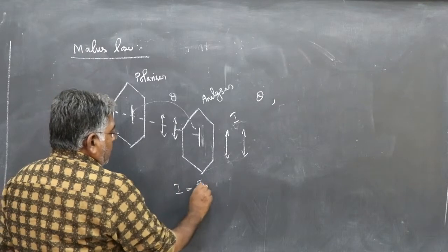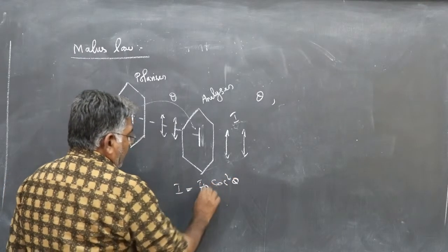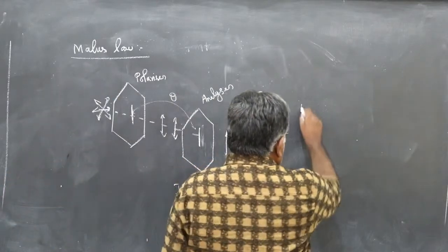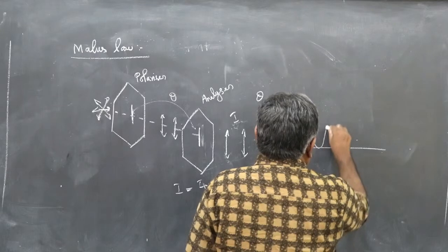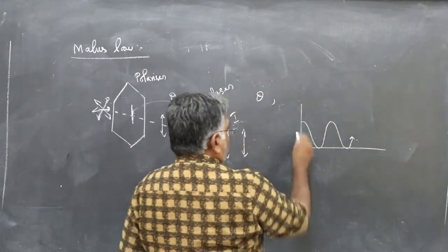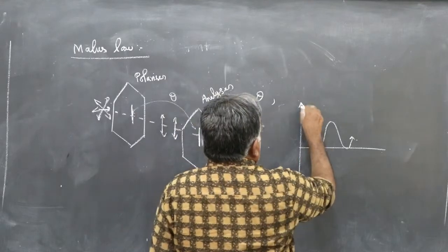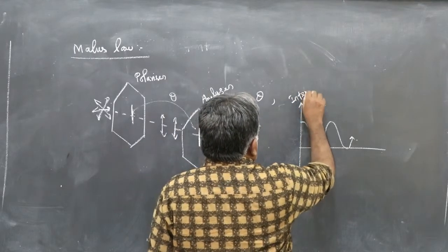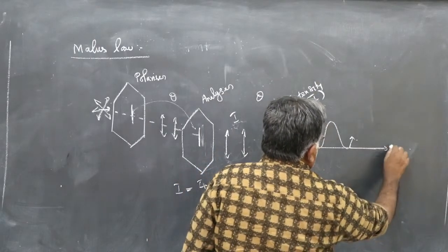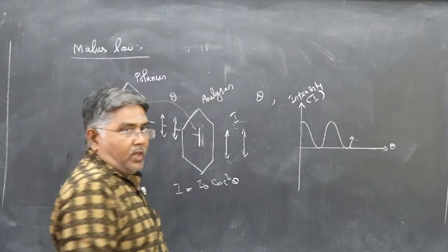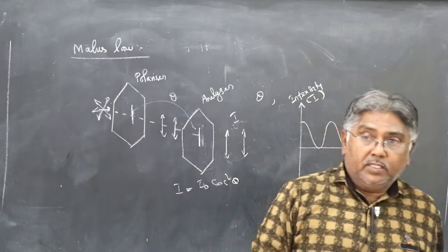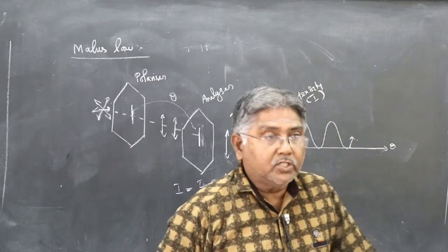Commonly you may have come across I = I₀cos²θ, and you draw a cos² theta graph. Here, this axis is intensity I (in watts per meter squared) and this axis is theta. This is the cos² theta graph.